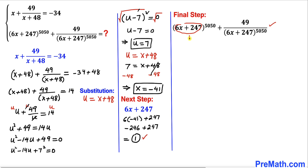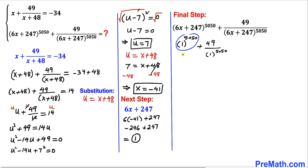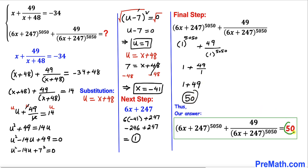So I replace 6x plus 247 by 1 in the full expression. This becomes 1 power 5050 plus 49 divided by 1 power 5050. Since 1 to any power is 1, this simplifies to 1 plus 49 divided by 1, which equals 1 plus 49, giving us 50. Thanks for watching and please don't forget to subscribe to my channel for more exciting videos.